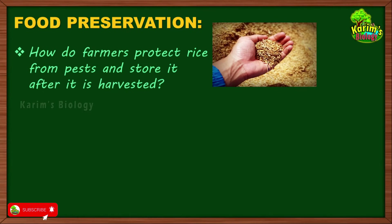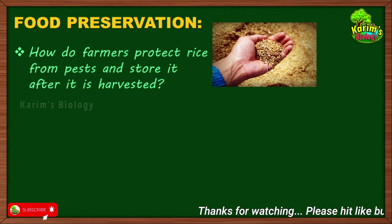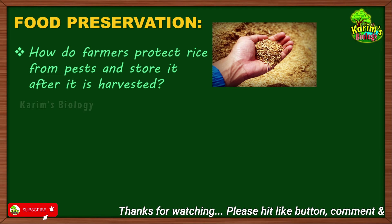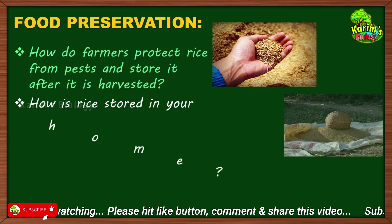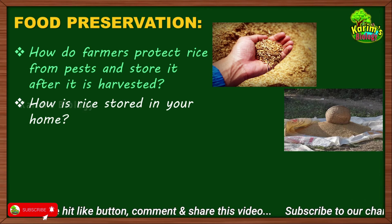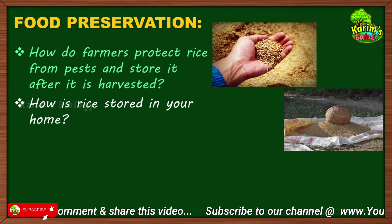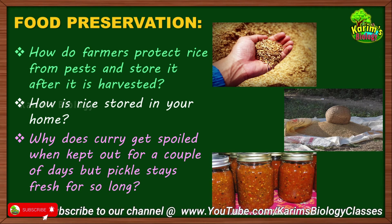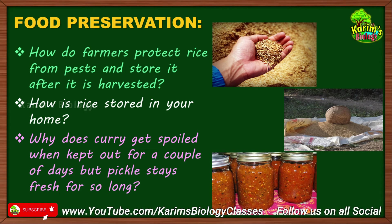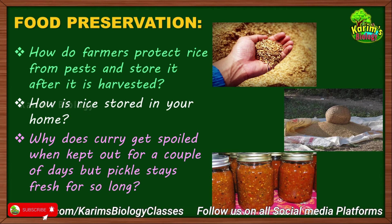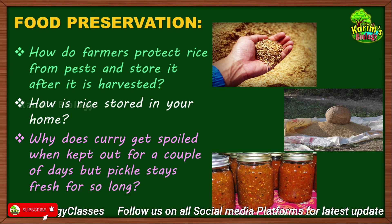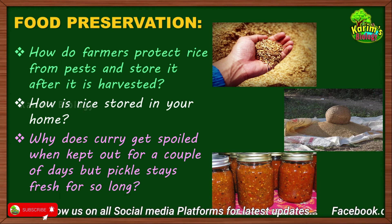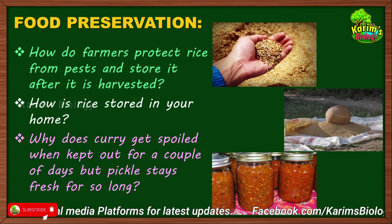Before I begin, I would like to ask you a few simple questions. The first question is: how do farmers protect the rice from pests and store it after it is harvested? Second, how is rice stored in your home? Have you ever observed how your parents store the rice? And why does curry get spoiled when kept out for a couple of days, but pickles stay fresh for so long?